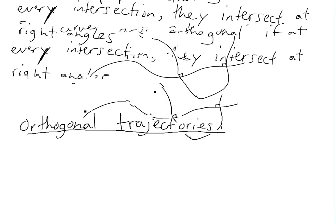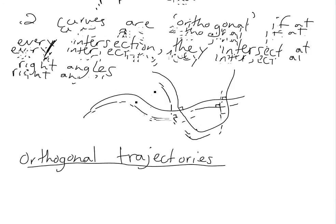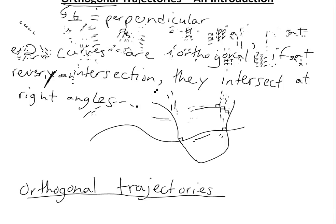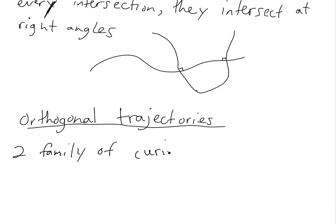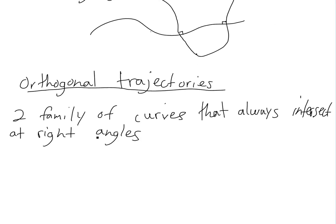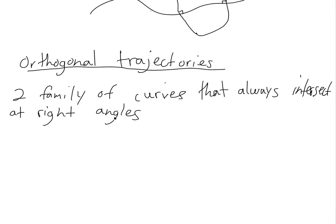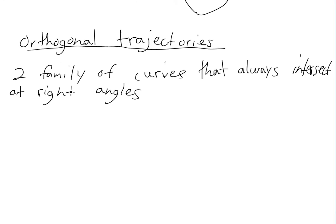Orthogonal trajectories are basically the same thing as that definition, except now we're going to look at two families of curves that intersect at every point at right angles — every single time they intersect, it's always a right angle.